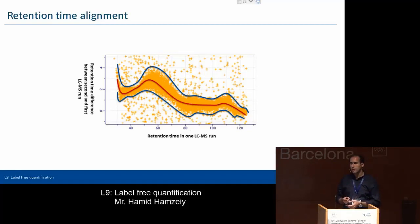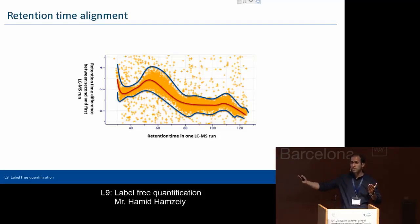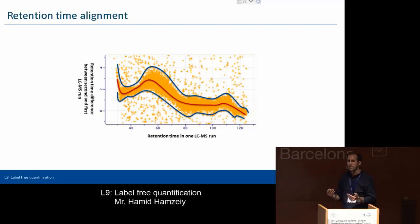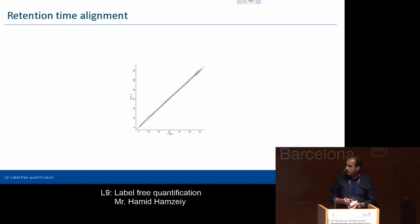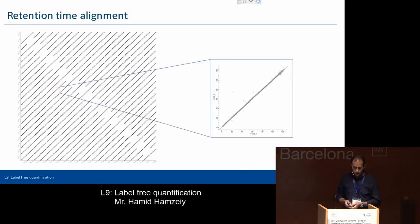Even if you have time series data where sample 1 is completely different from sample 10, it's okay if there's a gradient in the difference. The algorithm clusters the runs first and does retention time alignment for the most similar runs, avoiding problems. If you do this retention time alignment properly and then plot the retention time of peptides from one sample against another, you just get a nice straight line — even with very many samples, showing this problem can be solved quite well.